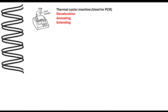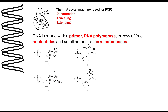It goes through a thermocycler machine with an increase and decrease of temperature. Our DNA sample, when we look at DNA sequencing, is mixed with a primer, with DNA polymerase, and with excess free nucleotides so that they can build a new strand.